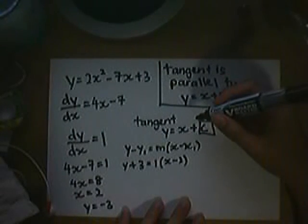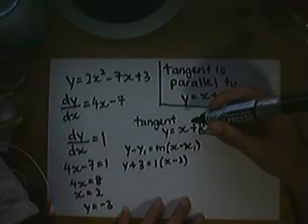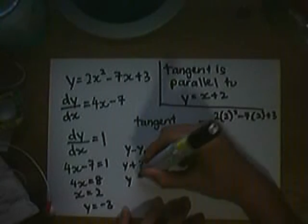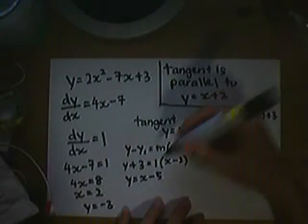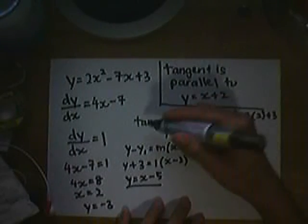Therefore, we will get, in turn, y equals x minus 5. This, ladies and gentlemen, is your tangent.